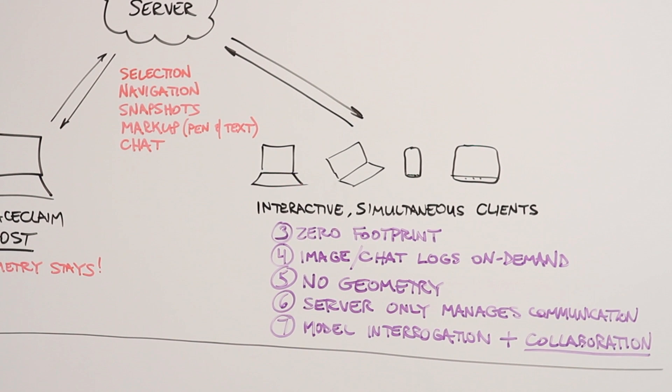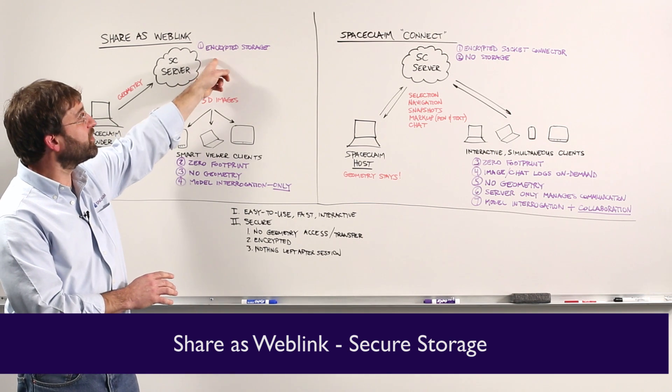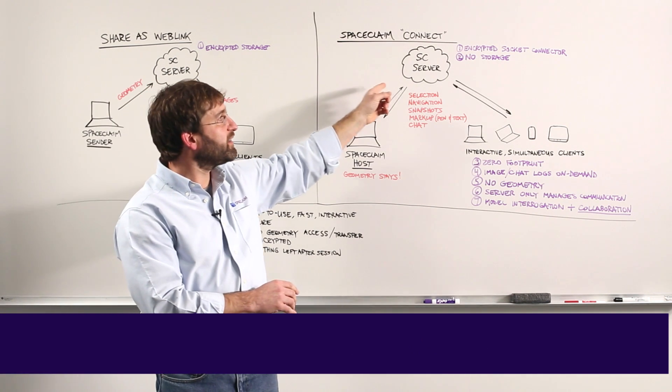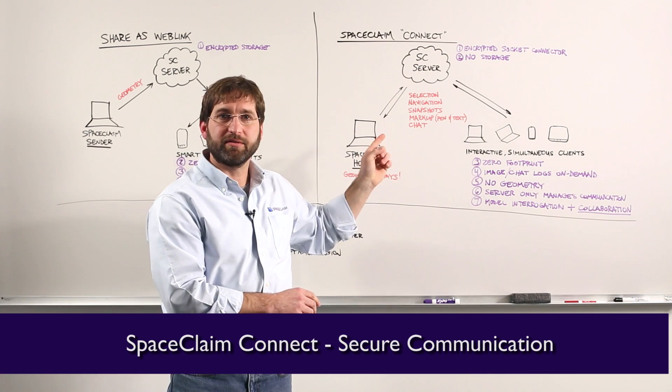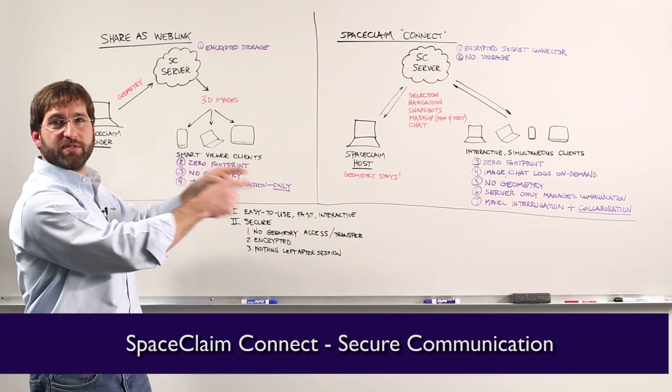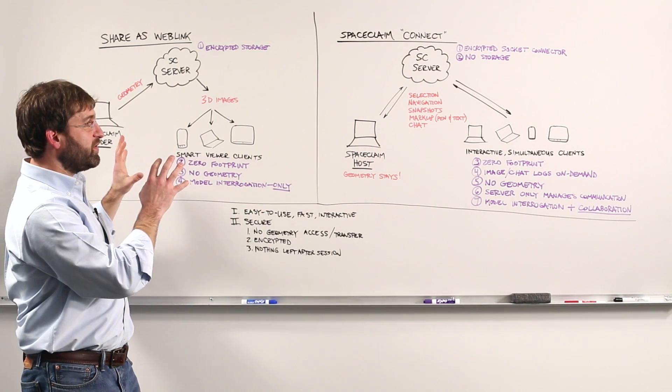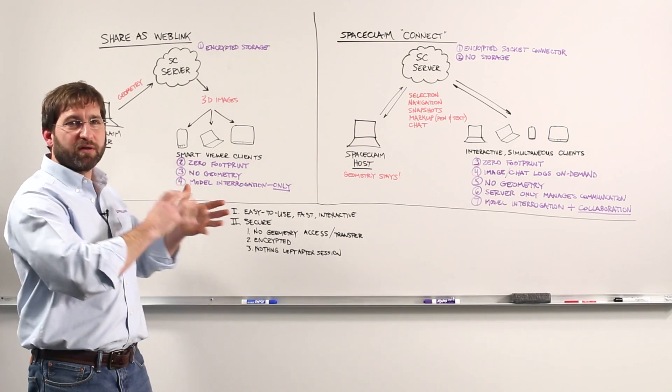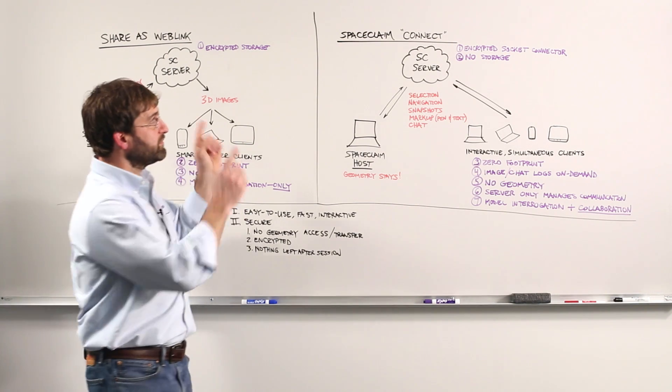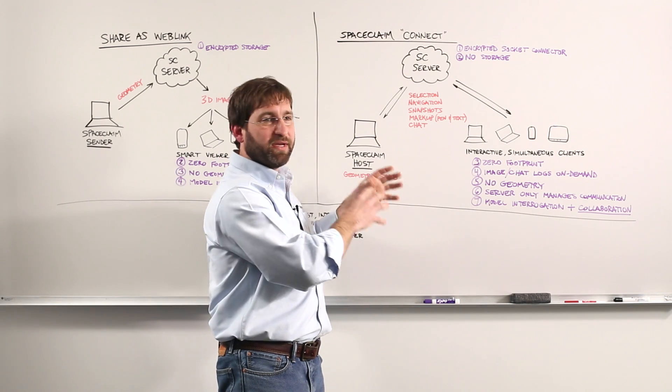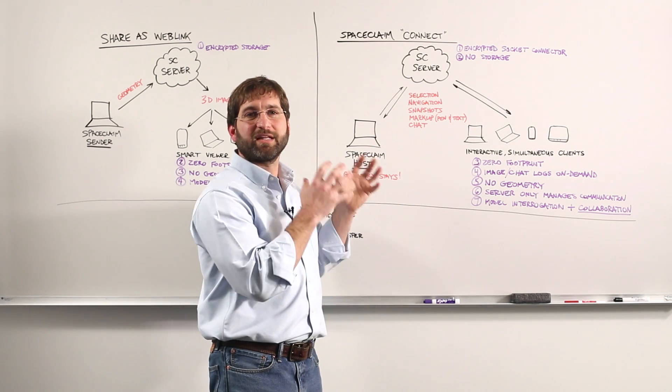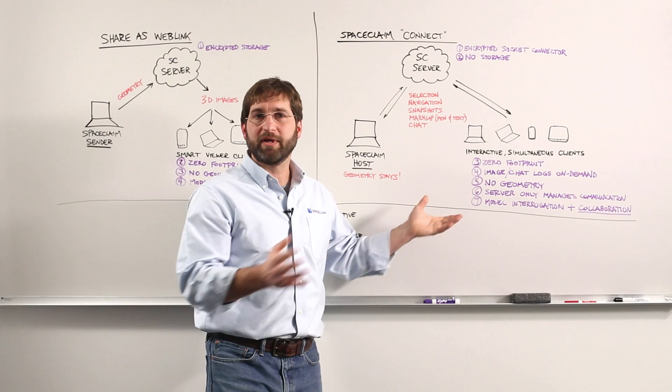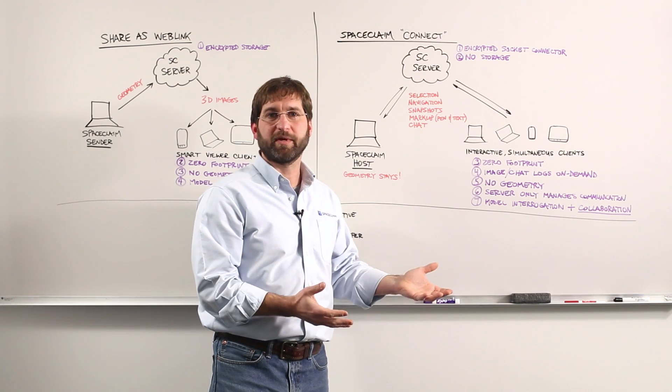So to summarize, Share as Web Link gives you encrypted storage. SpaceClaim Connect gives you encrypted communication. Both these solutions give you 3D model interrogation. Over here in SpaceClaim Connect, you get interactive simultaneous collaboration. Nobody else has that, but you're going to get it with SpaceClaim.